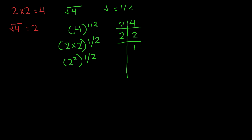Notice that we have 2 to the power of 2 to the power of 1 half — that is, a power to the power of. When that's the case, you can multiply the powers. So 2 to the power of 2 and then to the power of 1 half: multiply 2 and 1 half. The 2s cancel out and we're left with 1. So we have 2 to the power of 1, or simply 2, as our answer. That is how we got the 2.